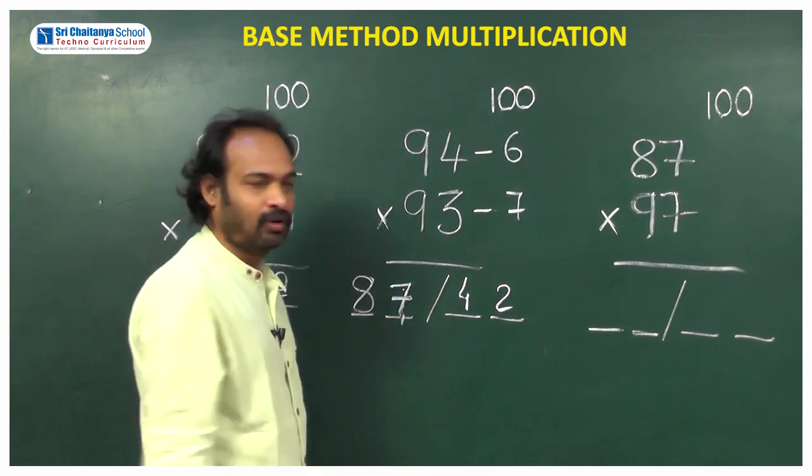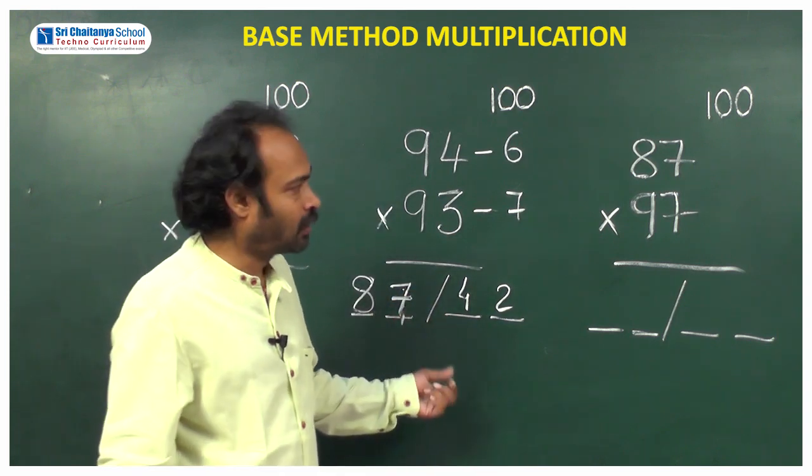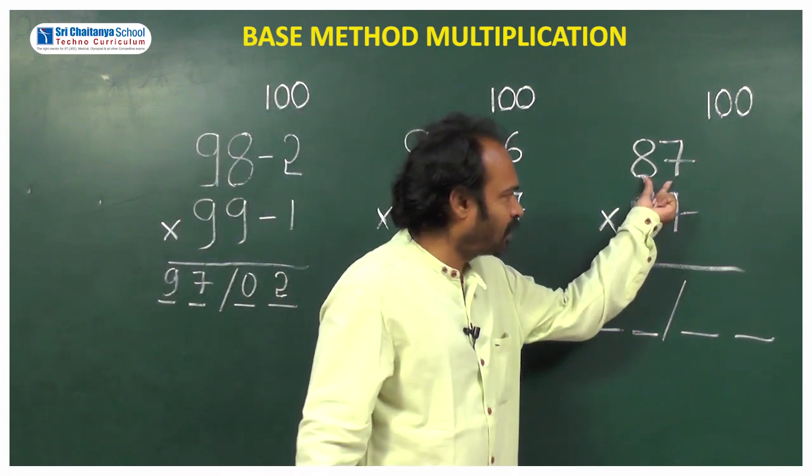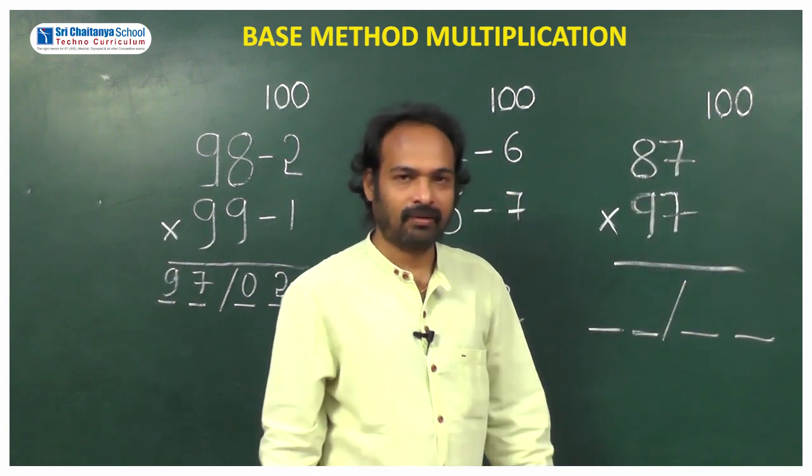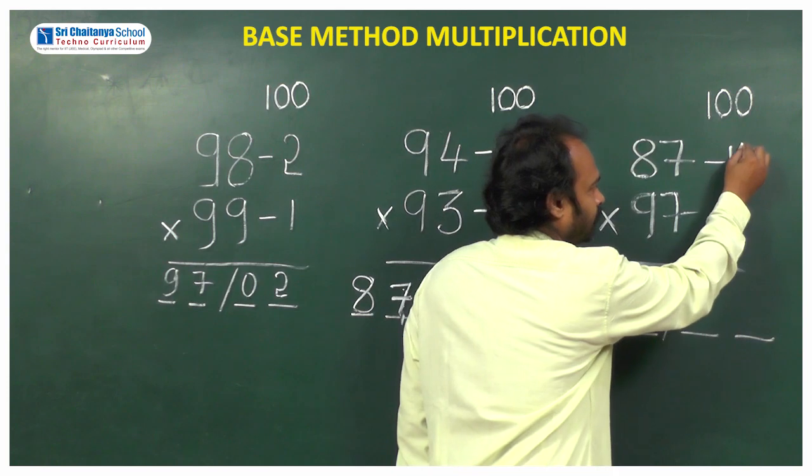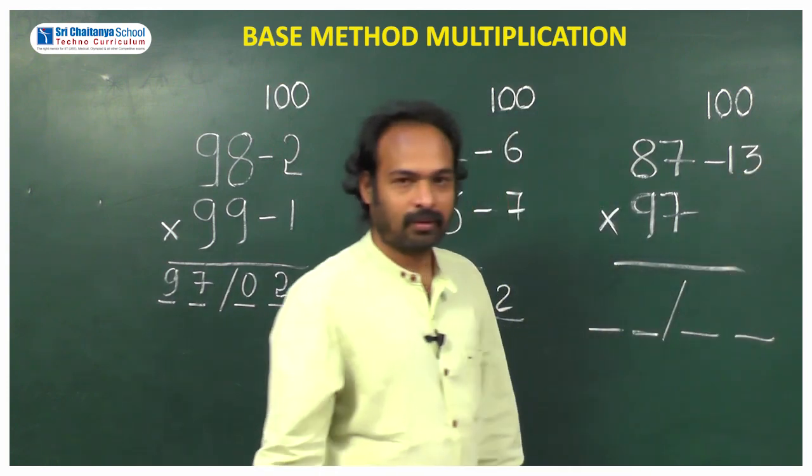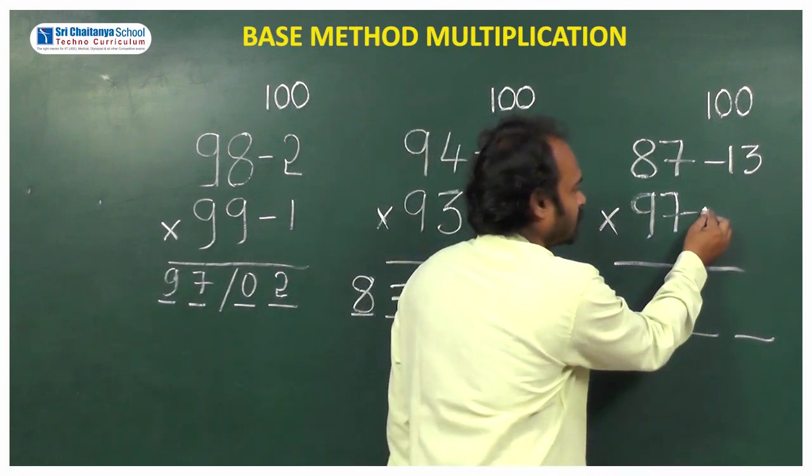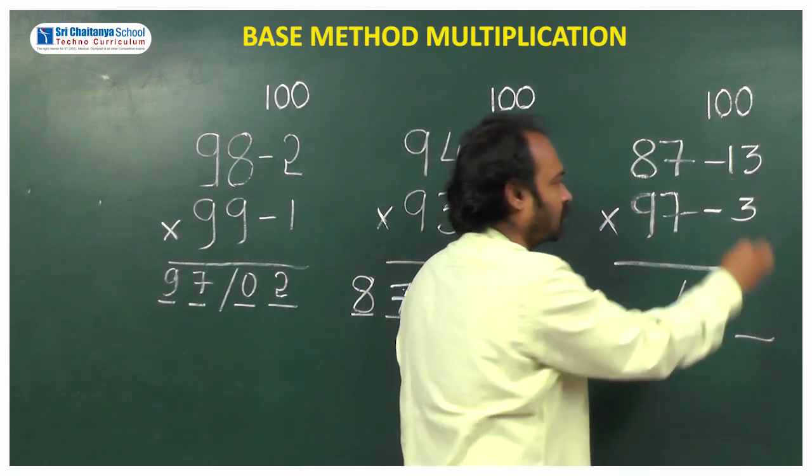Let us go for another example. Now what is the difference between 87 and 100? 13. What is difference between 97 and 100? 3. 100 minus 3 is 97.